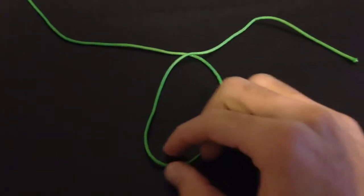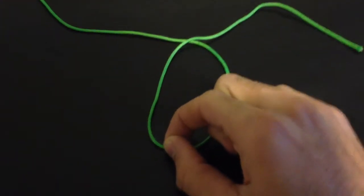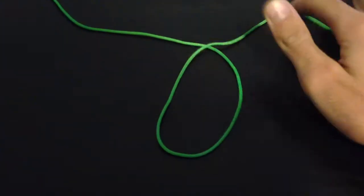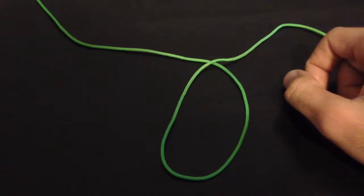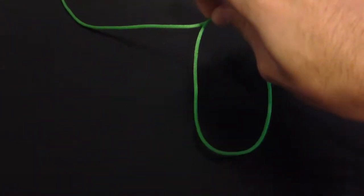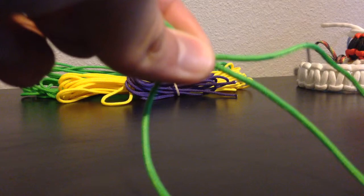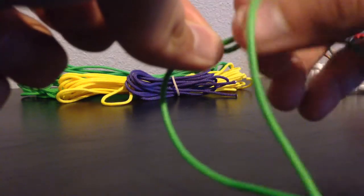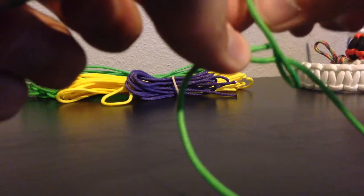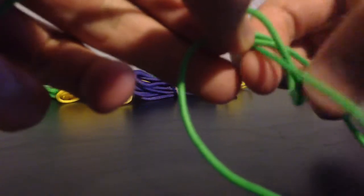You need to find the center of your strand, which is right here, and you make a loop like this. So you have your loop and you come under, and you go under one more time.